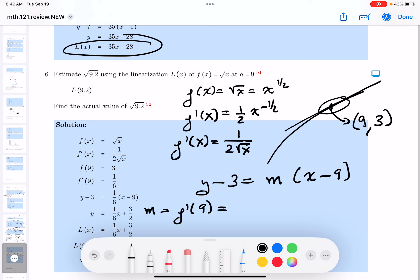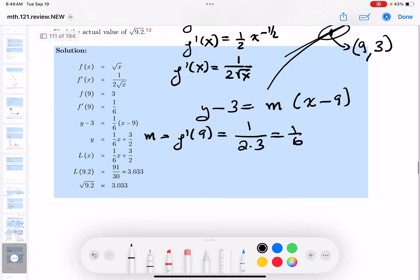What does this give me? Let's write this down. It's going to be 1 over 2 times 3, which is 1/6. Okay, I'm going to write the linearization down, but I have to write this down first. What's m? It's 1/6. Then you get x minus 9.